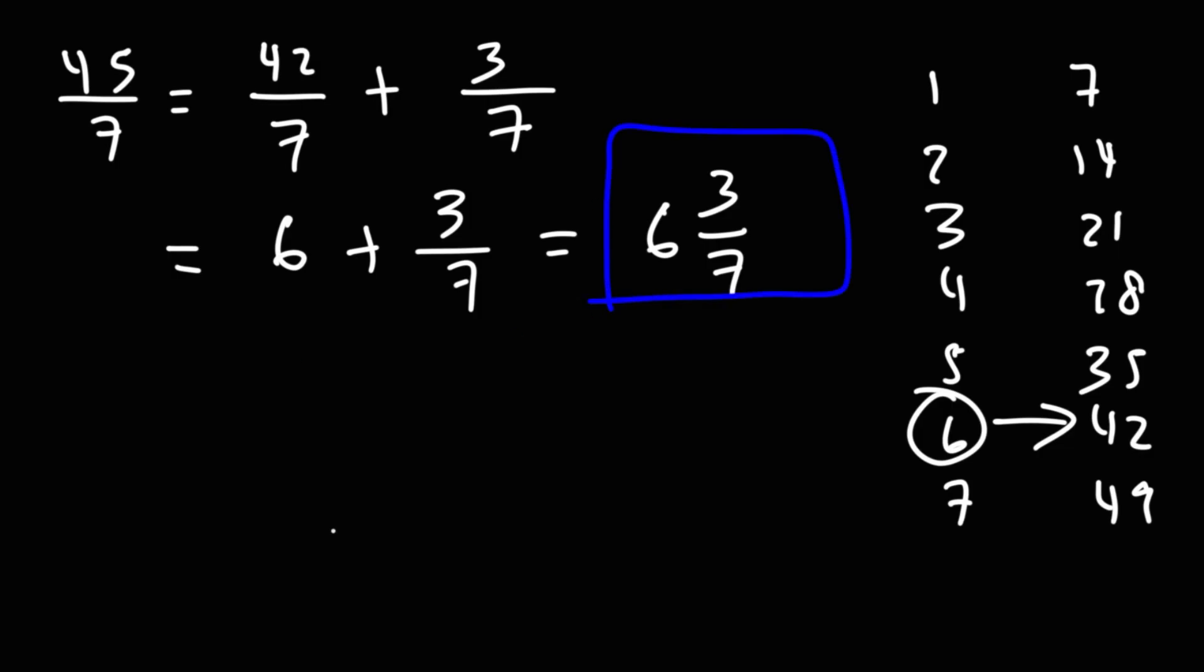And you can check your work. To convert the mixed number back into an improper fraction, keep the denominator the same. Multiply 6 and 7, which is 42 plus 3. That's 45.